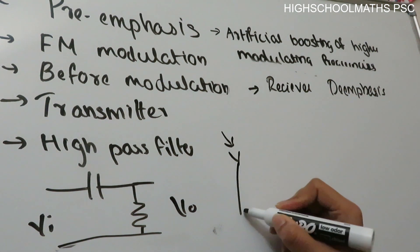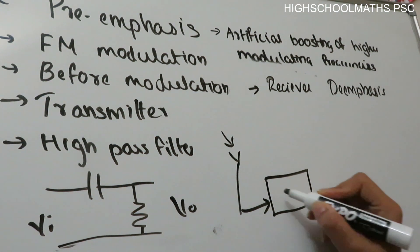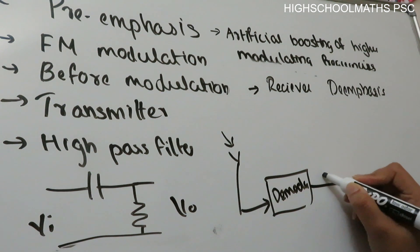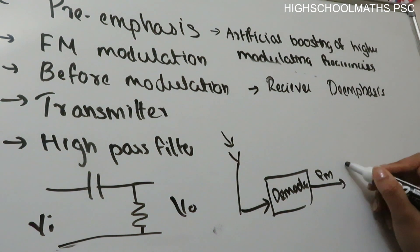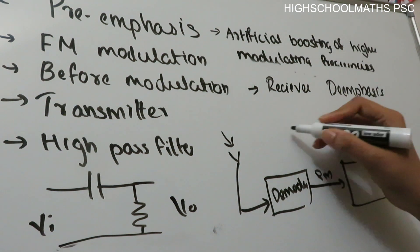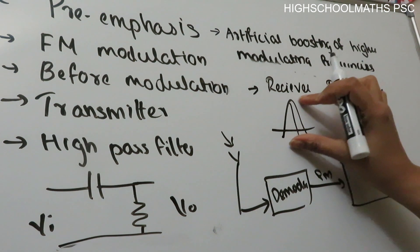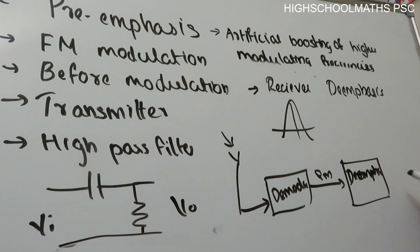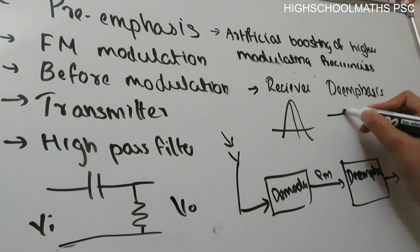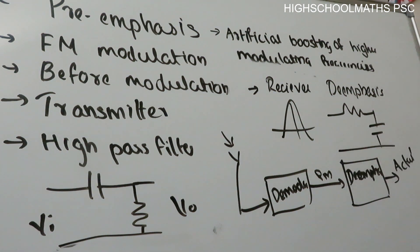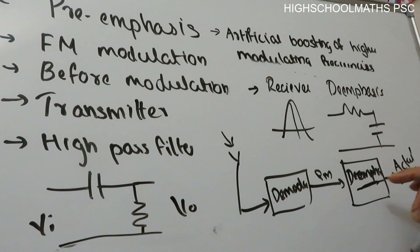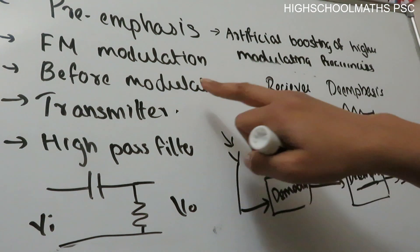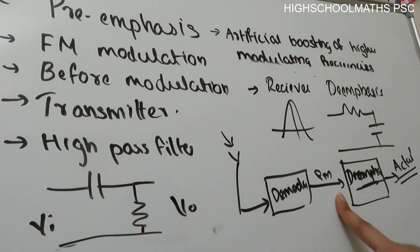In the receiver, after the antenna receives the modulated FM signal, it is demodulated. The demodulated signal passes through the de-emphasis circuit, which is a low-pass filter. The low-pass filter passes low frequencies and attenuates high frequencies, nullifying the pre-emphasis boost applied at the transmitter and restoring the original modulating signal.